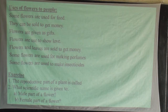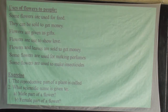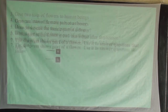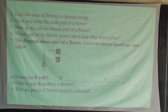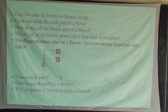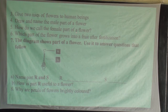From here, you are given an exercise to look at. Number one: the reproductive part of a plant is called dash. Then: what scientific name is given to the male part of a flower? And the female part of a flower? Give two uses of flowers to human beings. Draw and name the male part of a flower — the stamen — showing the anther, the filament. Number five: how do we call the female part of a flower? And: which part of a flower grows into a fruit after fertilization?